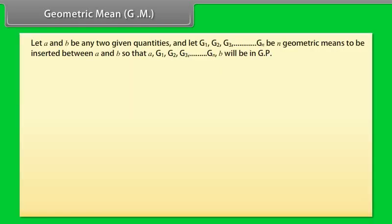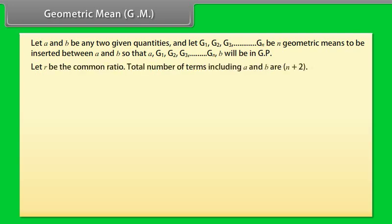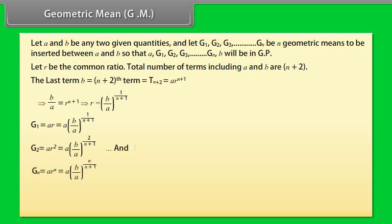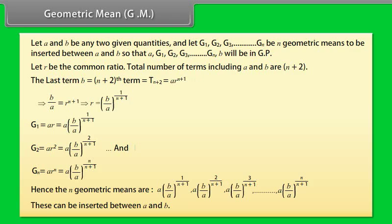Let A and B be any two given quantities, and let G1, G2, G3, up to Gn be n geometric means to be inserted between A and B, so that A, G1, G2, G3, ..., Gn, B will be in GP. Let R be the common ratio. The total number of terms including A and B is n+2. G1 = A×R = A×(B/A)^(1/(n+1)), G2 = A×R² = A×(B/A)^(2/(n+1)), and Gn = A×Rⁿ = A×(B/A)^(n/(n+1)).